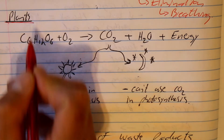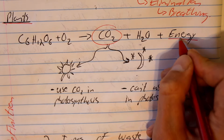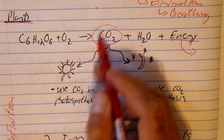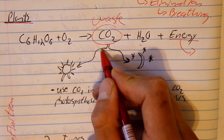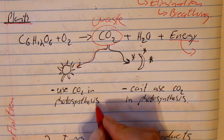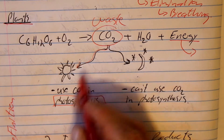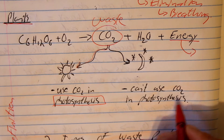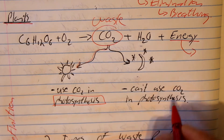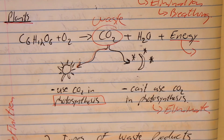In plants, glucose is broken down to carbon dioxide, water, and energy. Again, the plant uses the energy. The carbon dioxide, which is a waste product, gets used during the day by the plant in the process of photosynthesis as the plant takes up the carbon dioxide. However, at night photosynthesis does not occur and the carbon dioxide can't be used — it becomes a waste product and the plant needs to eliminate it.